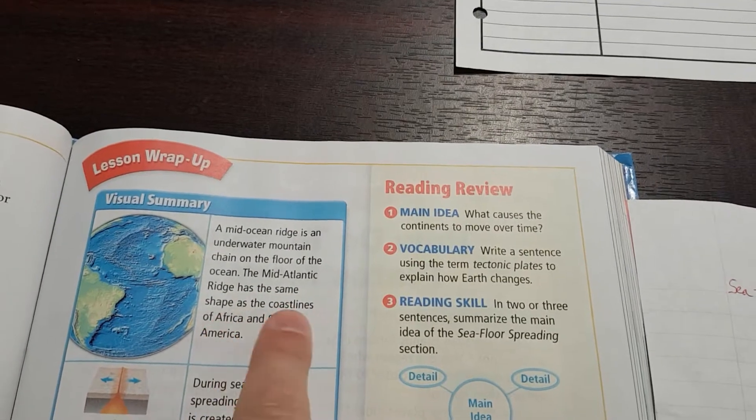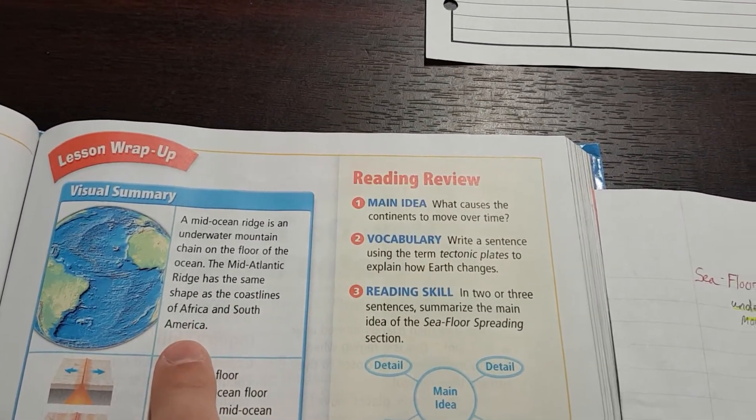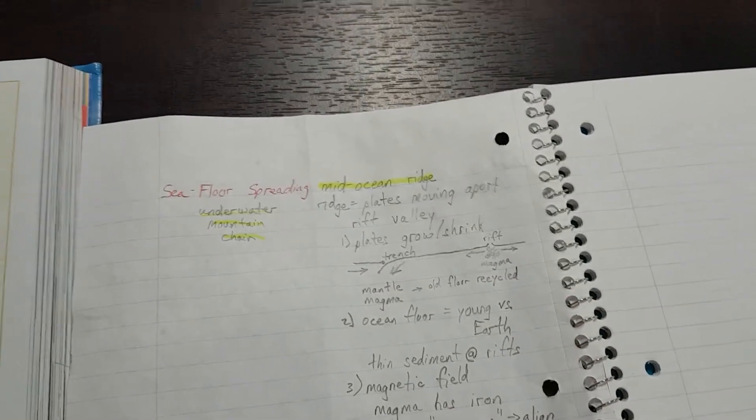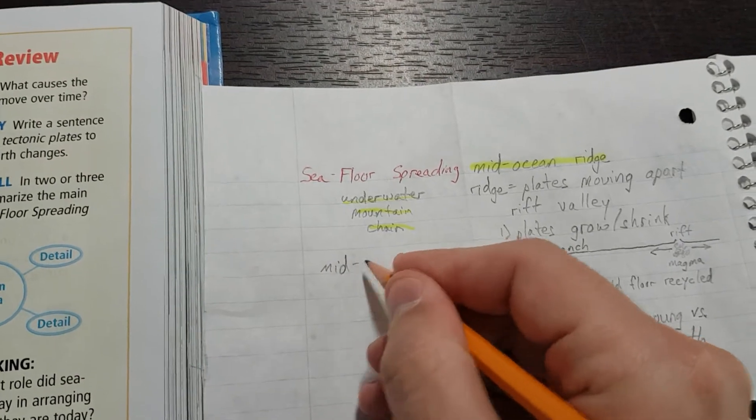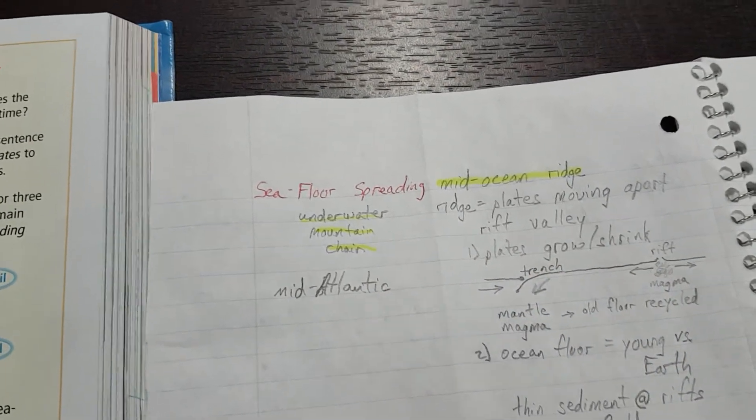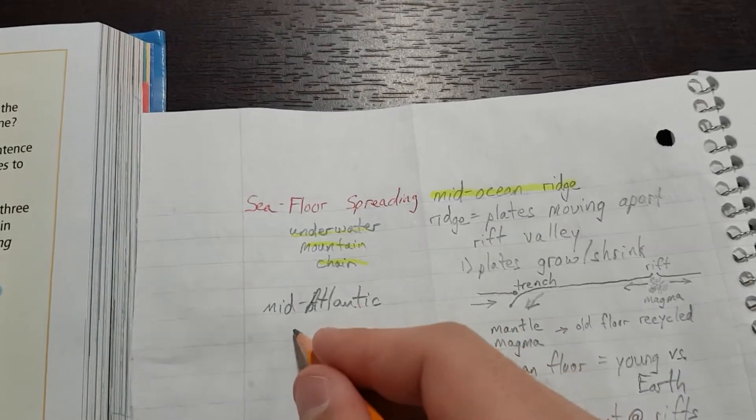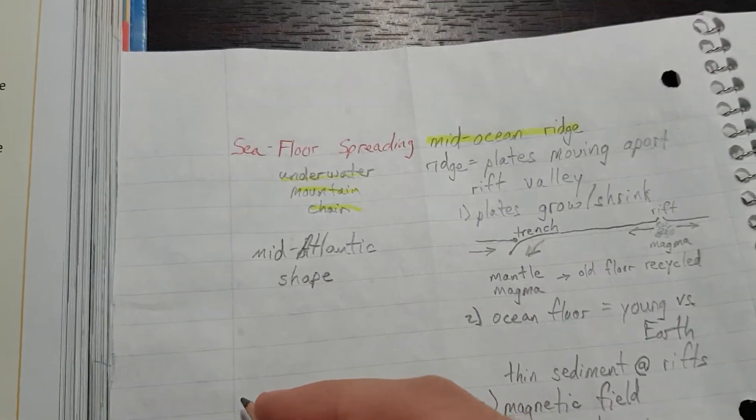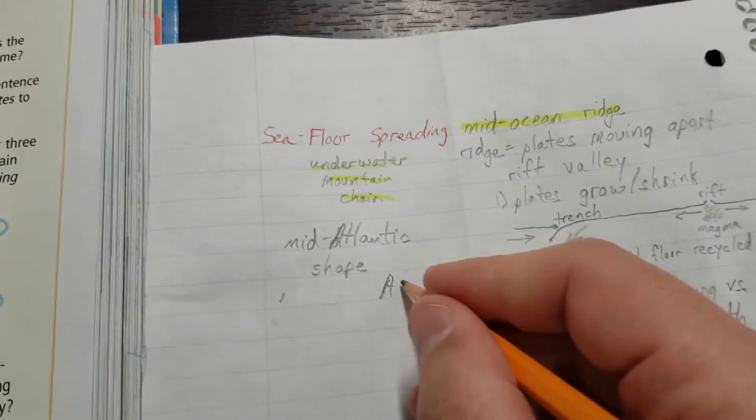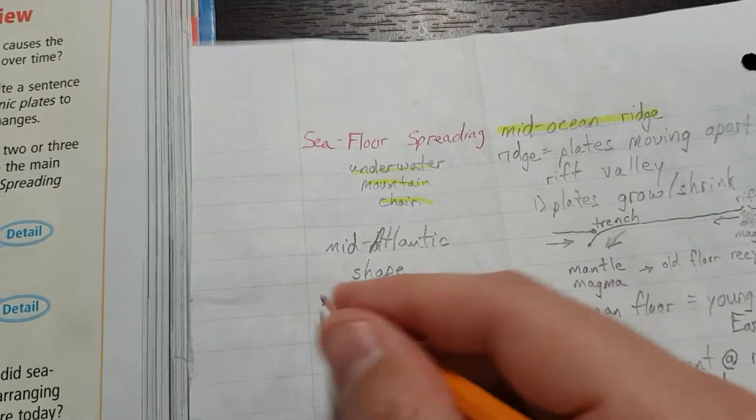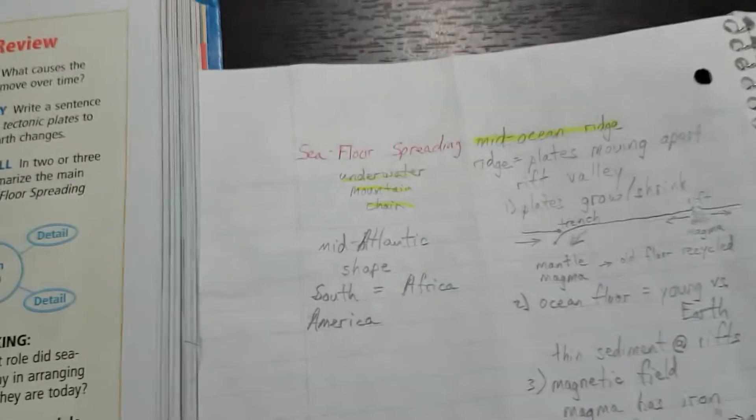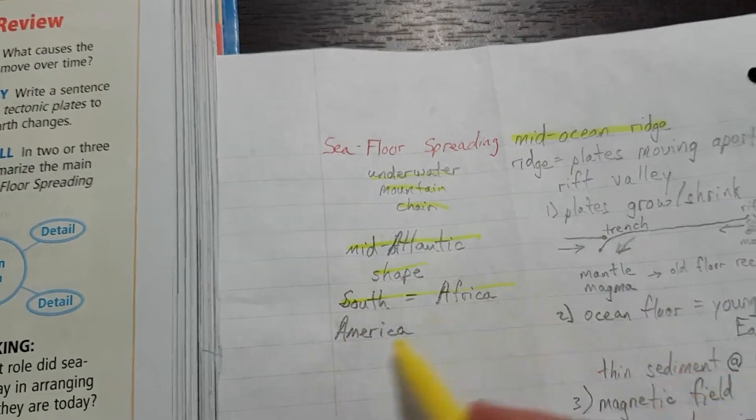The mid-Atlantic ridge has the same shape as the coastlines of Africa and South America. Okay. Let's see. Did we put that? No, we didn't. Okay. So, mid-M-I-D dash Atlantic, capital A-T-L-A-N-T-I-C, mid-Atlantic, shape, S-H-A-P-E. Africa, let's put Africa on the right because that's what it is in the picture. Capital A-F-R-I-C-A equals South, capital S-O-U-T-H, America, capital A-M-E-R-I-C-A. So, the mid-Atlantic ridge has the same shape in South America and Africa.